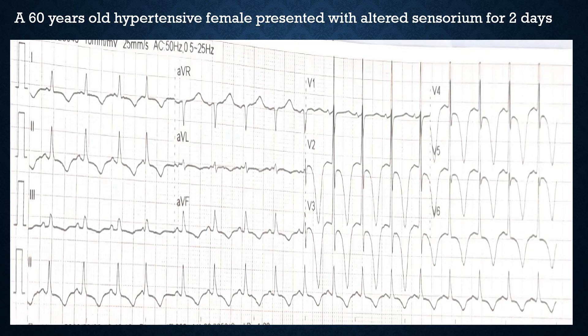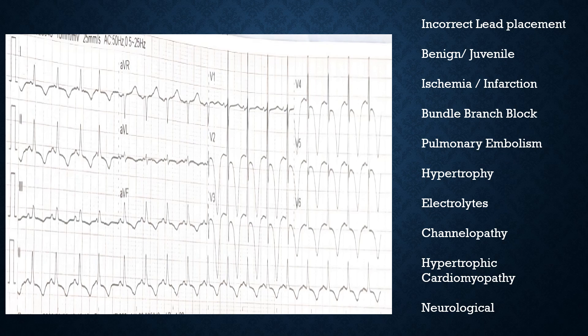Looking at the ECG, we can see some changes related to the T waves. Let's discuss the differentials for these T wave inversions. There are many possibilities: incorrect lead placement, benign or juvenile T waves, ischemia or infarction, bundle branch block, pulmonary embolism, hypertrophy, electrolyte imbalances, channelopathies, hypertrophic cardiomyopathy, and neurological causes.